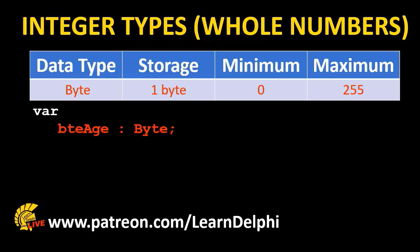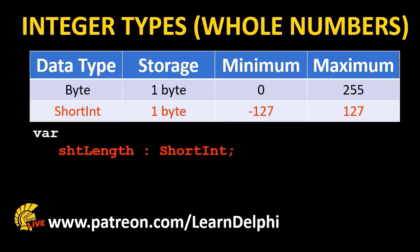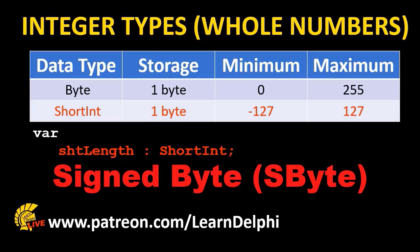The smallest integer is a byte. It is called a byte because its storage in memory is exactly one byte. Bytes range from 0 to 255. Delphi also supports short int. A short int is also one byte in storage, but half of the numbers are negative and the other half is positive, with zero in the middle. In some programming languages this is called a signed byte, because of the minus sign that may appear in front of the number.